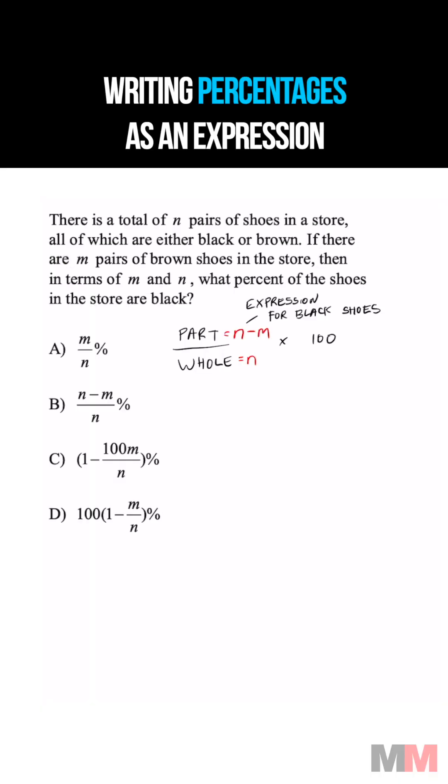Let's clean this up. We have n minus m on top, divide that by n, and multiply by 100. That doesn't show up in the choices, so we need to simplify.